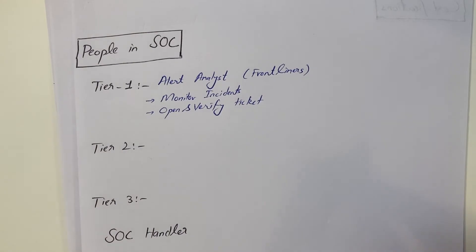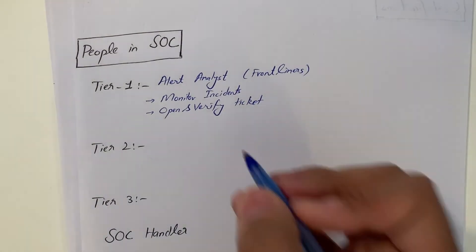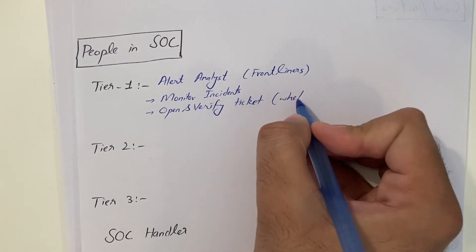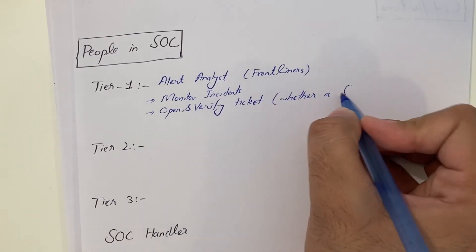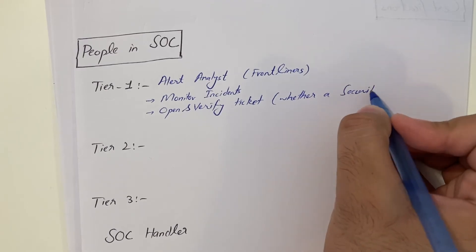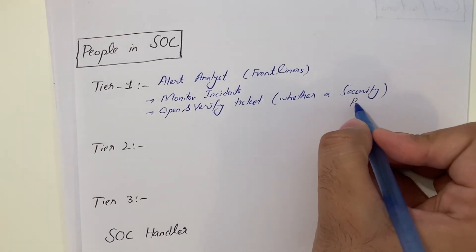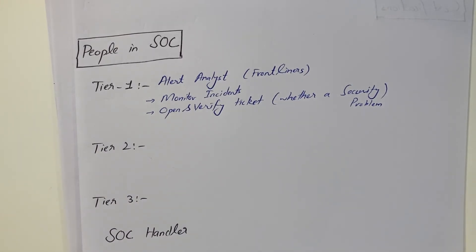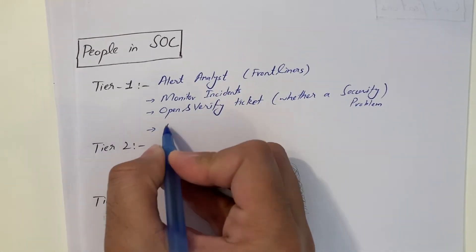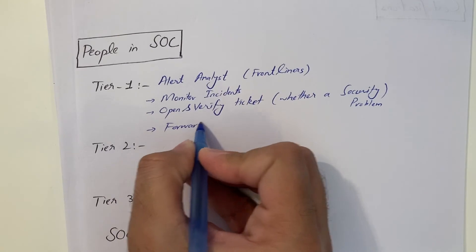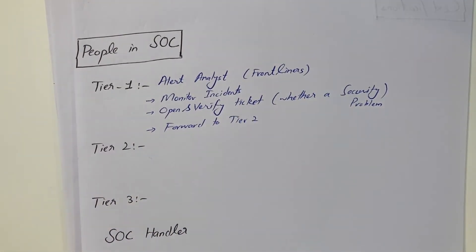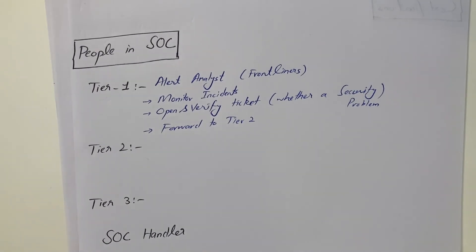Whenever somebody created tickets saying I think I got hacked, they open the ticket, verify the ticket. Verify means whether it's a security problem or not. If it is not a security problem, then they forward the ticket to Concerned Department and try to solve the issue. If they couldn't, then they forward the ticket to Tier 2.